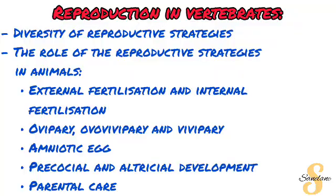The first topic in your Paper 1 scope is reproduction in vertebrates. This is by far the shortest topic in all of life sciences, specifically in Paper 1. What you need to cover under it is the diversity of reproductive strategies — the role of animals in external fertilization and internal fertilization, oviparous, viviparous and ovoviviparous and the definitions between them and how to differentiate them. You are also looking at the amniotic egg, precocial and altricial development, and the parental care of different animals.